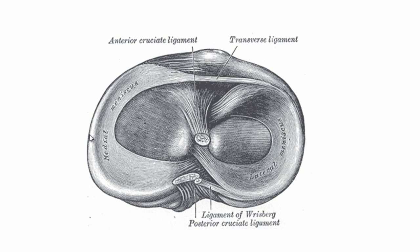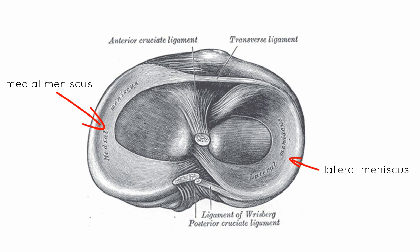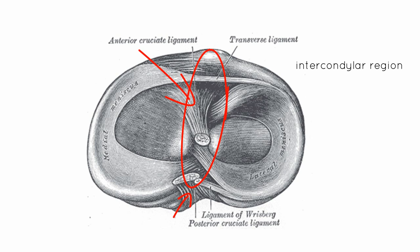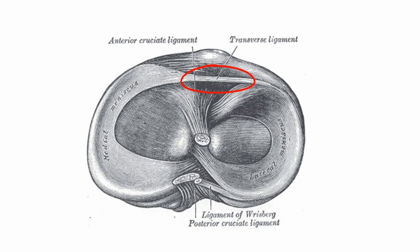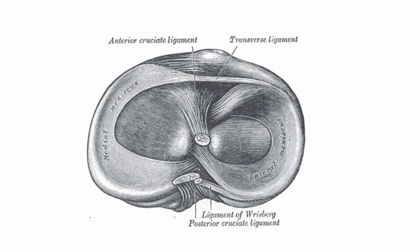Switching to another diagram: we're looking superiorly at the tibial plateau, with anterior up here and posterior down this side. You can see the crescent-shaped menisci — a medial meniscus and a lateral meniscus — attaching in the central intercondylar region. The anterior and posterior cruciate ligaments also attach here. Anteriorly, there's a ligament connecting the two menisci called the transverse ligament. Notably, the medial meniscus is attached to the tibial collateral ligament and to the joint capsule, making it less mobile, whereas the lateral meniscus lacks these attachments and is much more mobile.